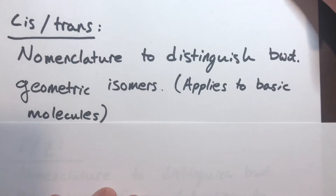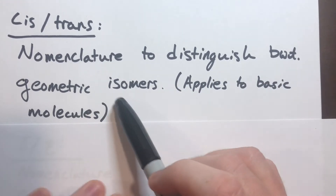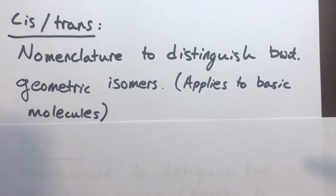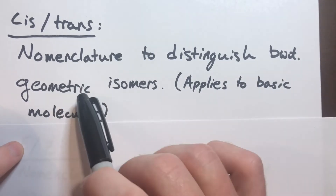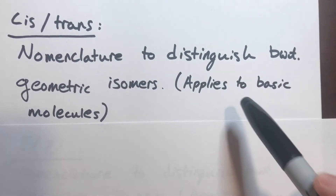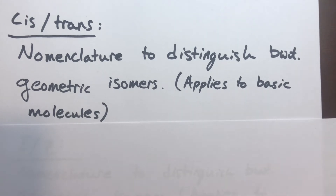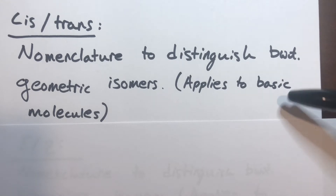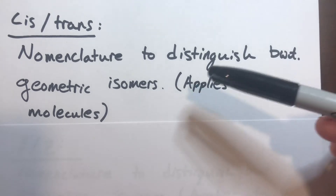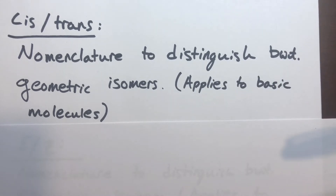Next we have cis and trans. Cis and trans is a nomenclature to distinguish between geometric isomers, which is a specific class of stereoisomers. The main point is that this cis and trans nomenclature only applies to very basic alkenes — ones that are substituted with the same types of groups. Cis and trans is a relatively restrictive nomenclature; it is only applicable in certain situations and for certain molecules.